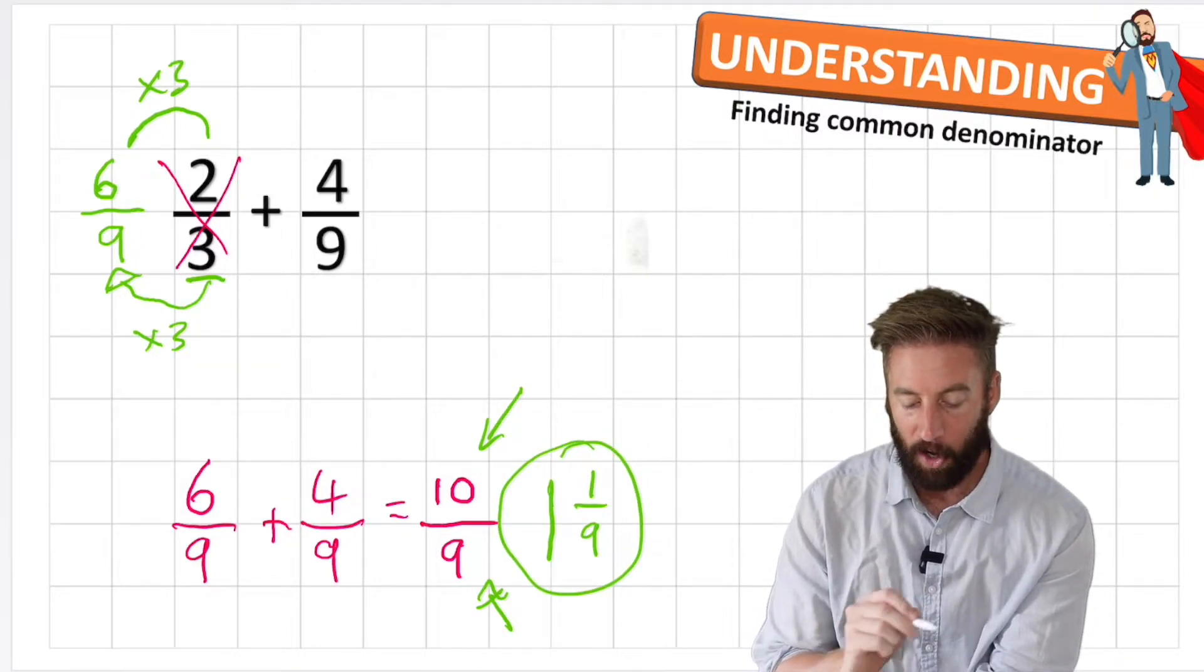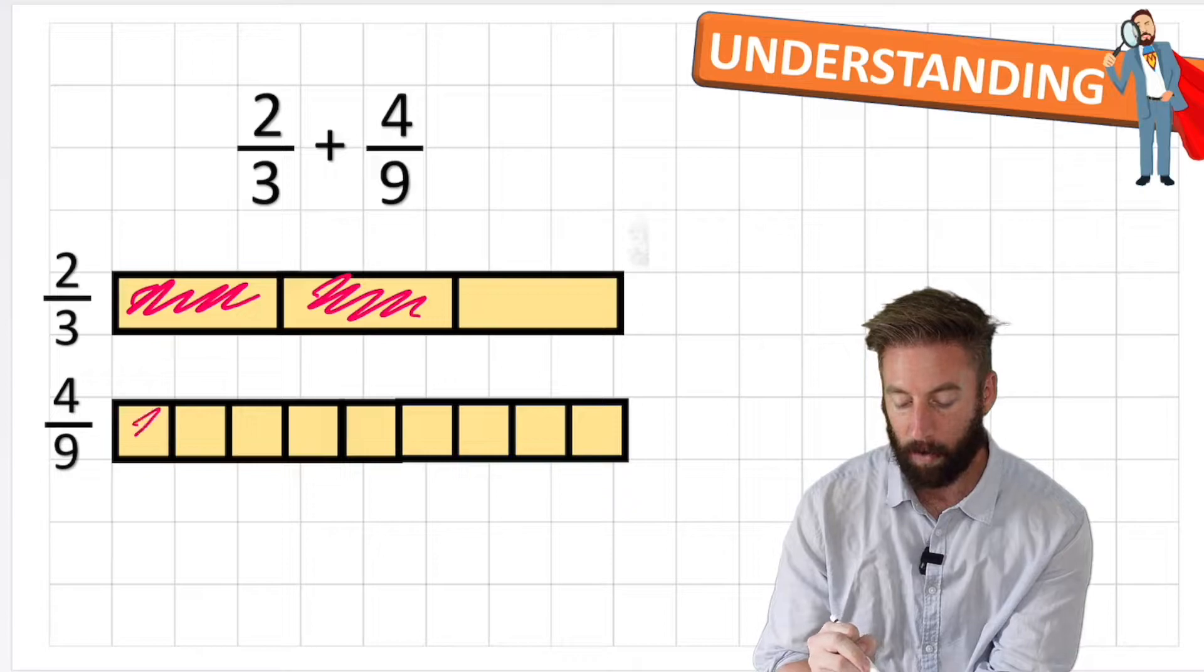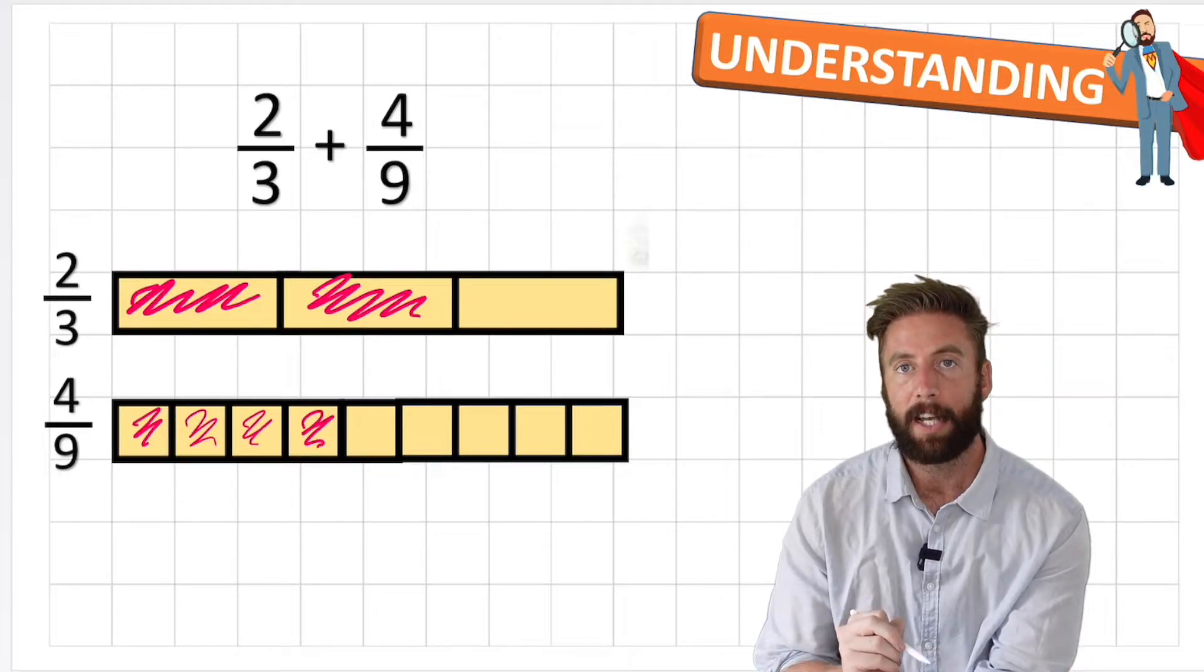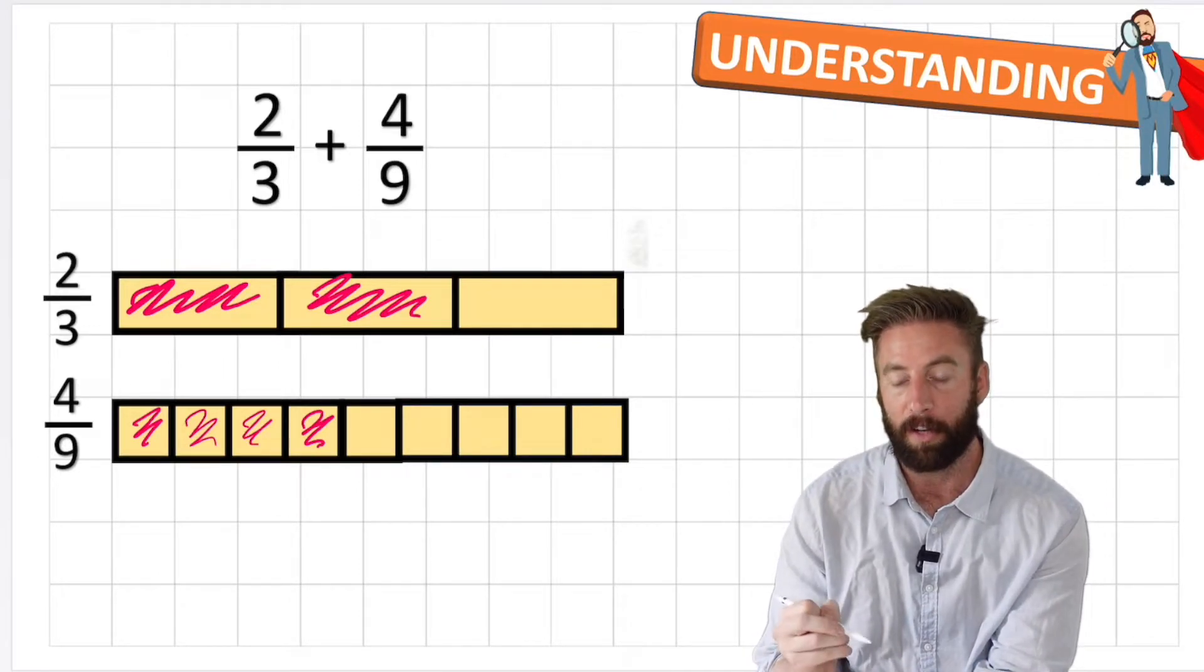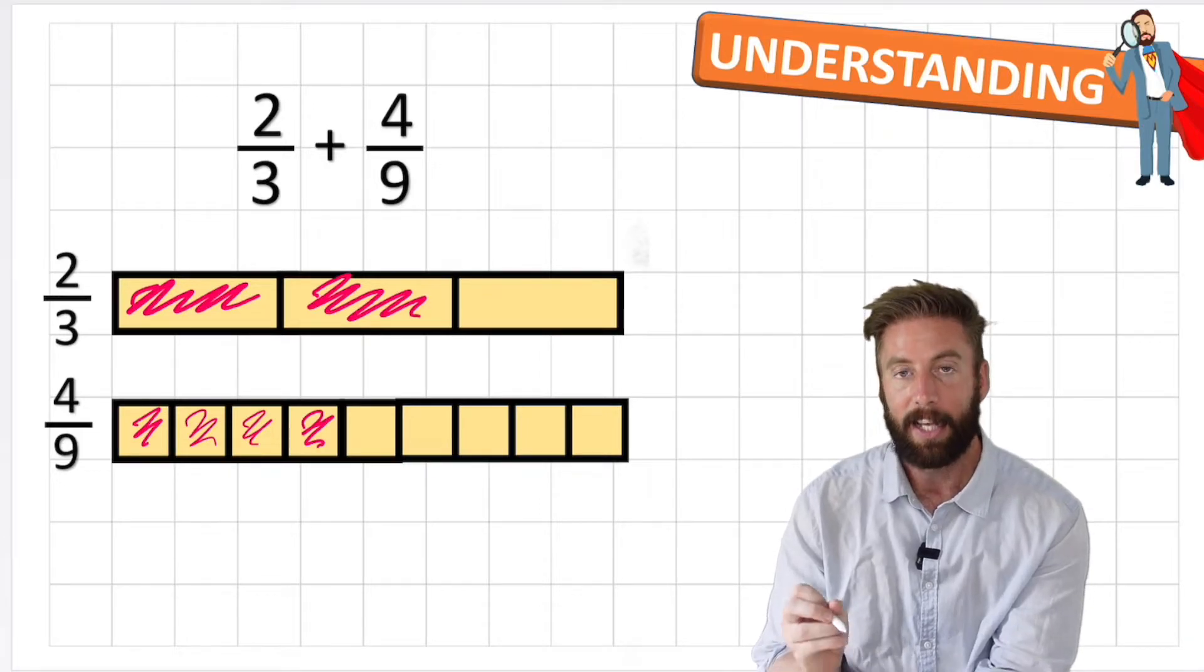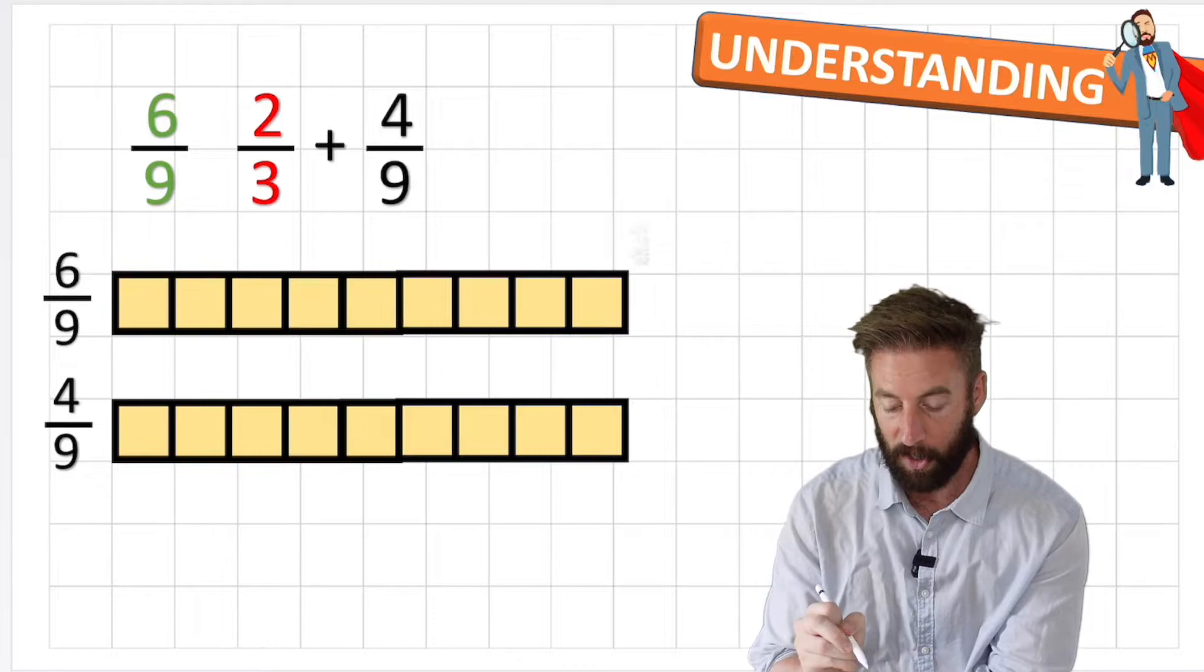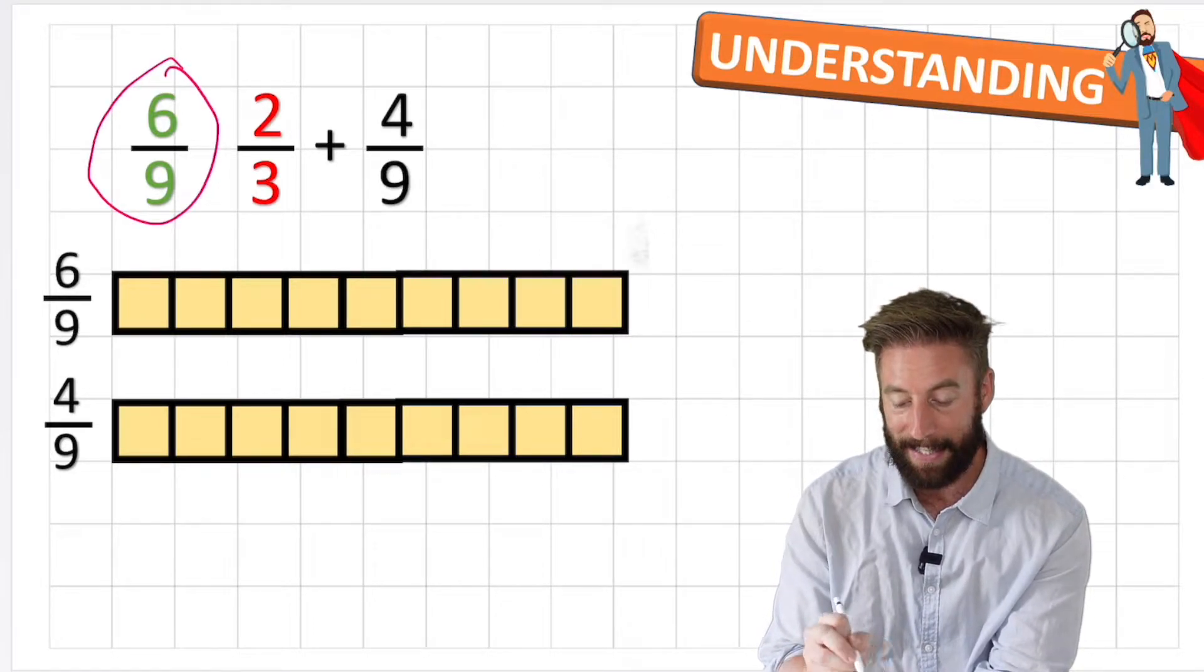Let's keep our understanding going here and look at this in our bar model. Originally my question said 2/3 plus 4/9. I could have said 2 thirds add 4 ninths. But you can see that this is really difficult to add up because I'm working with different volumes and different quantities of my fraction. This is in thirds and this is in ninths. It's very hard to add a third to a ninth. So what we did is we found an equivalent fraction, the 6/9. And now it's much easier to see that when we're adding these together we are simply adding the same quantity, the ninth every time.